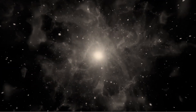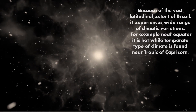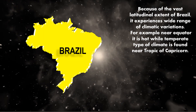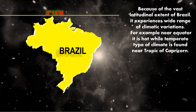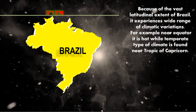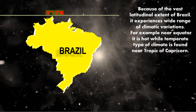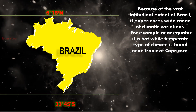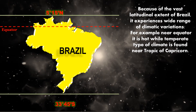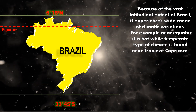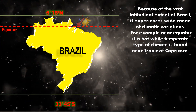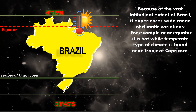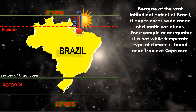Because of the vast latitudinal extent of Brazil, it experiences a wide range of climatic variations. Brazil extends from 5 degrees 15 minutes north to 33 degrees 45 minutes south. So the equator passes through the northern part of Brazil and the Tropic of Capricorn passes through the southern part of Brazil.